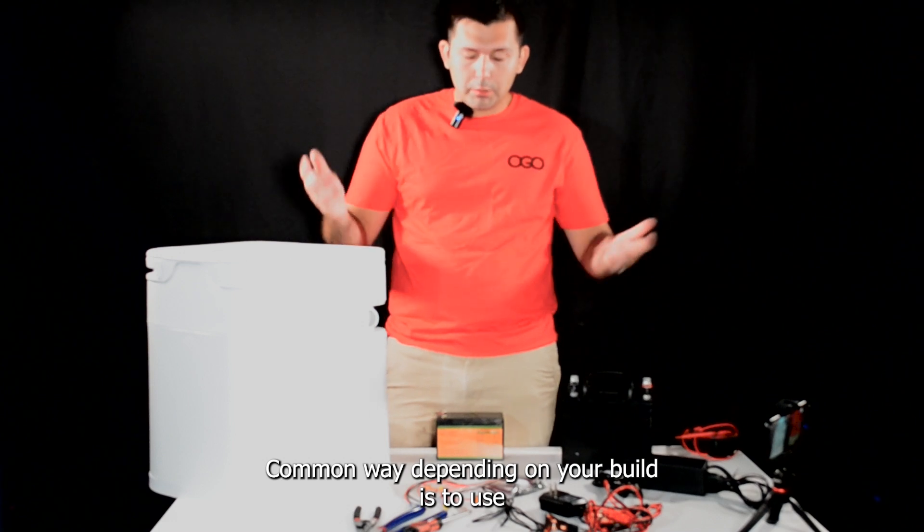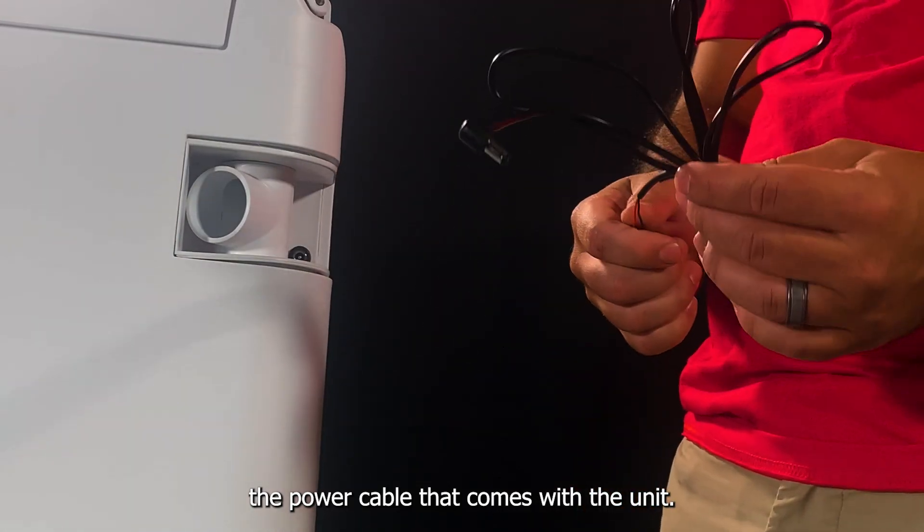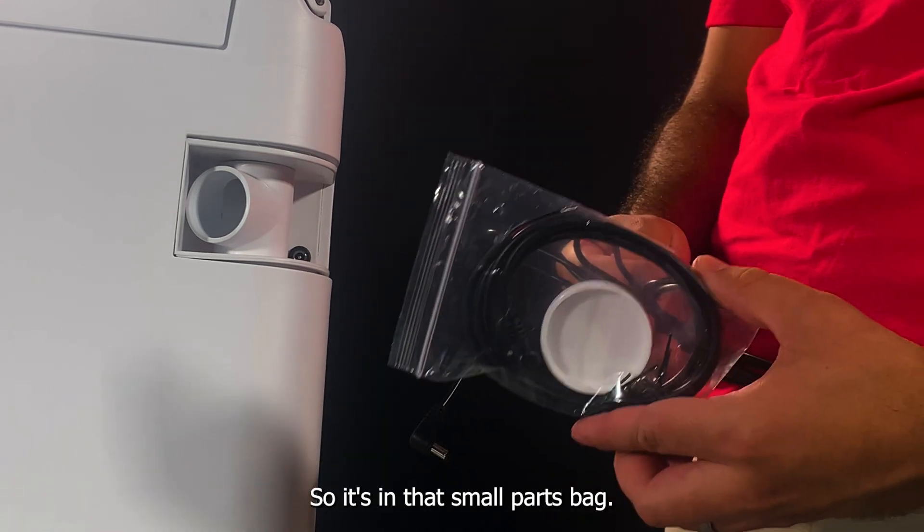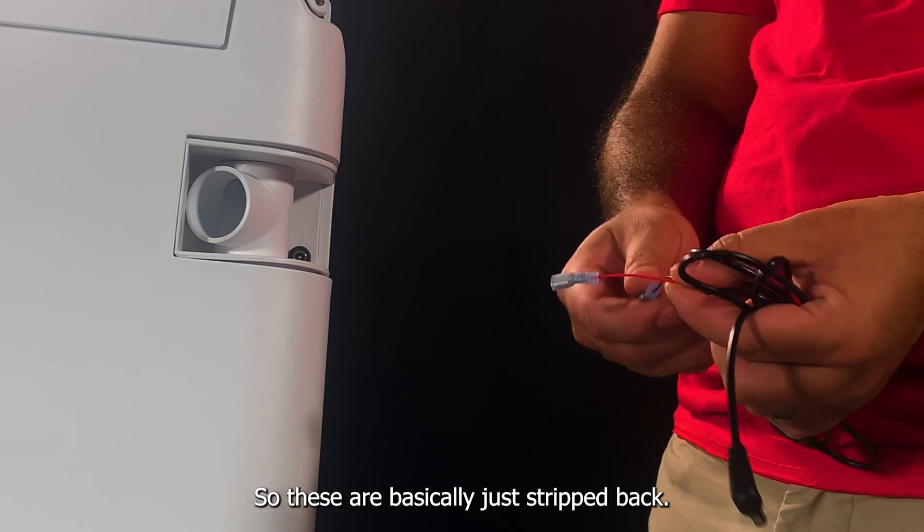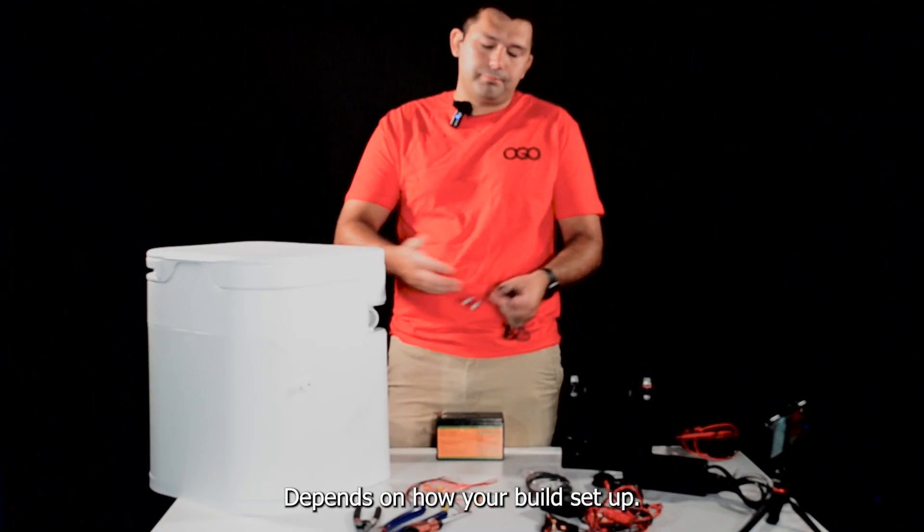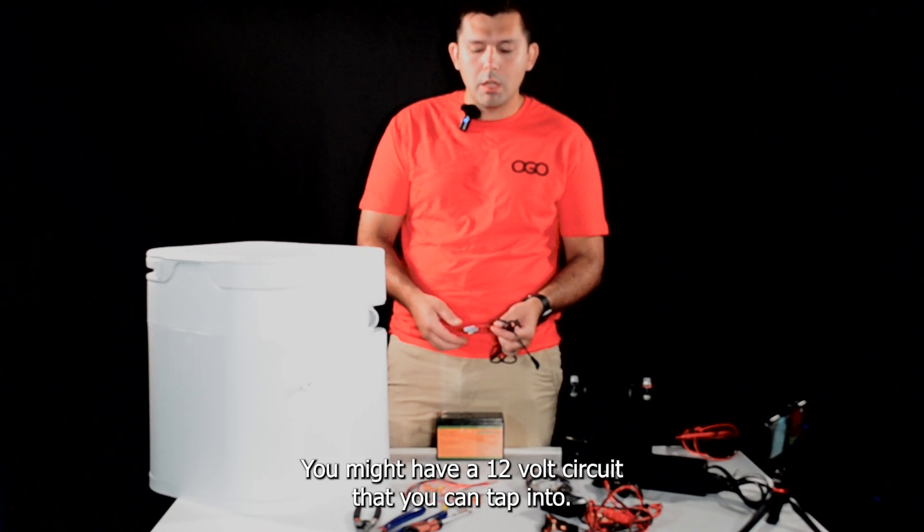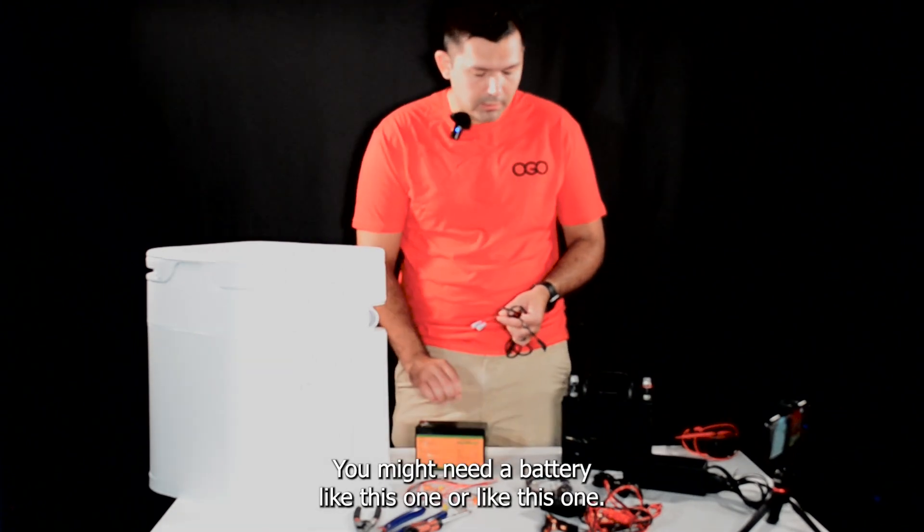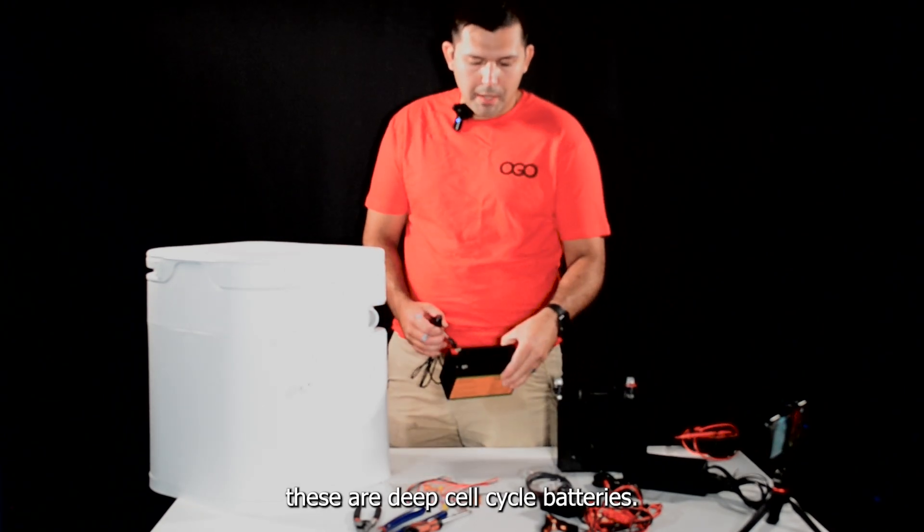A common way, depending on your build, is to use the power cable that comes with the unit in that small parts bag. It has open wire leads, so these are basically just stripped back. Depends on how your build's set up. You might have a 12 volt circuit that you can tap into, or you might need a battery like this one or like this one. These are deep cell cycle batteries.